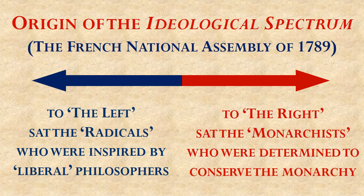Last lesson, we learned about the notion of what a liberal was 200 years ago, in the context of the divide in the French National Assembly between the liberals or radicals who wanted to get rid of the king, and the monarchists that wanted to keep the king. When we first brought up this idea a couple lessons ago, we described the monarchists as being conservative, wanting to preserve and keep things the way they were. Why did they want to keep the king rather than get rid of him, like the radical liberals wanted to?